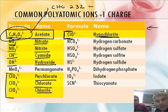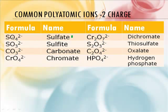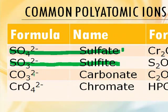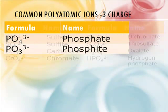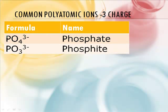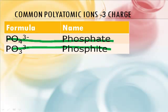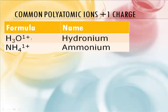Now for the negative two charges, you need to know sulfate, sulfite, and carbonate. Then moving on to the minus three charges: phosphate and phosphite — learn them both. And lastly, the ones with a positive one charge are hydronium and ammonium — know them both.